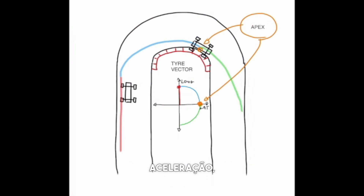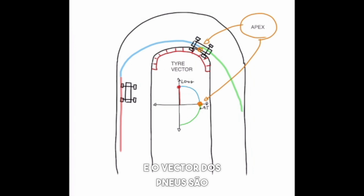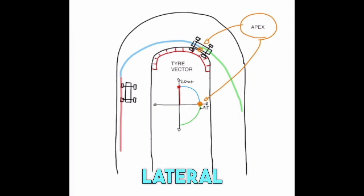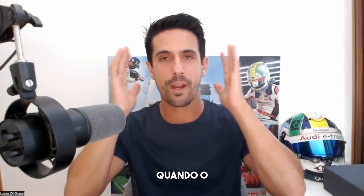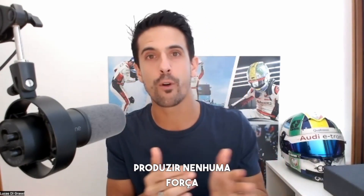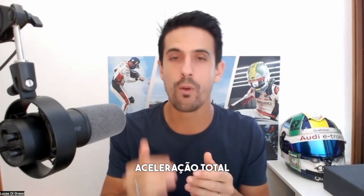Then you start the acceleration phase, which is the green part you can see on the graph and also on the racetrack. This means you're accelerating with only two wheels, while braking used all four, so the lines and tire vectors are slightly different. The rear tires, which are the important tires in this phase, are at maximum slip both laterally and longitudinally, so you apply throttle slowly. Then you have the full acceleration part — the pink phase — when the car is completely straight, you can go full throttle, the tires stop producing any lateral force, and the car only accelerates.